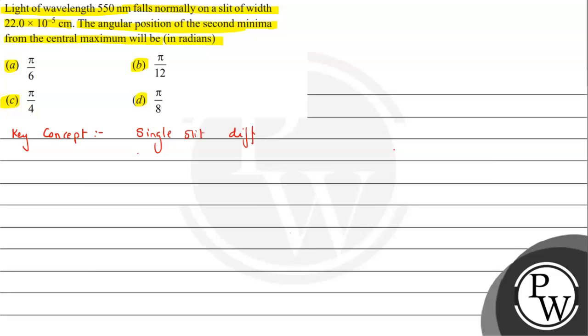So single slit diffraction, that is basically Fraunhofer diffraction we are talking about. Here we have learned the conditions about secondary minima.